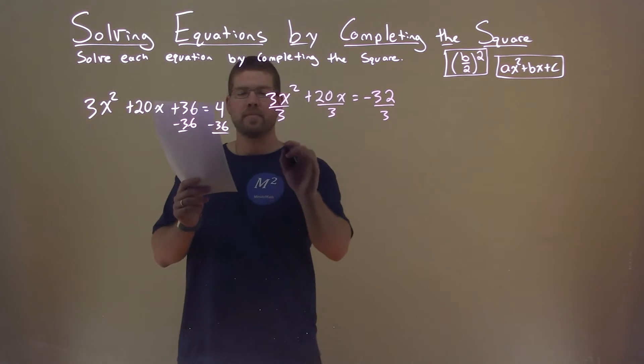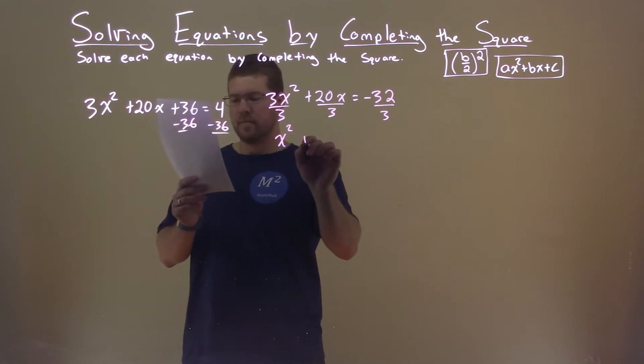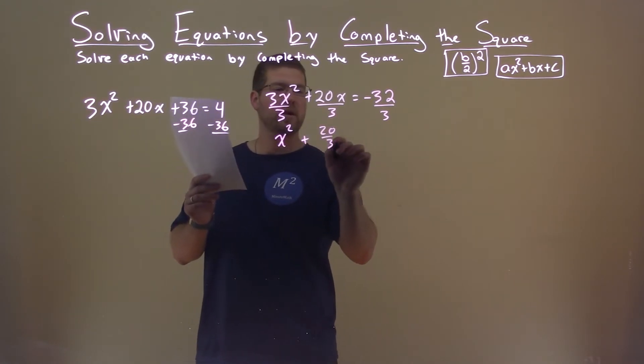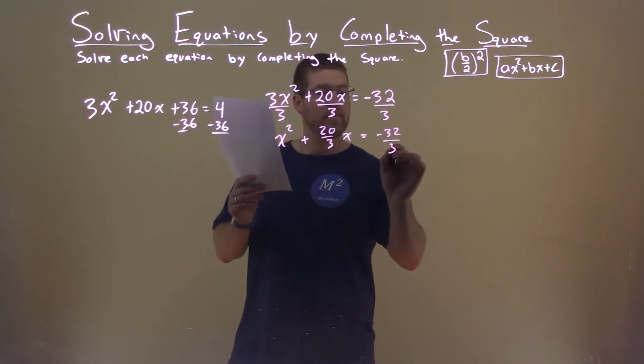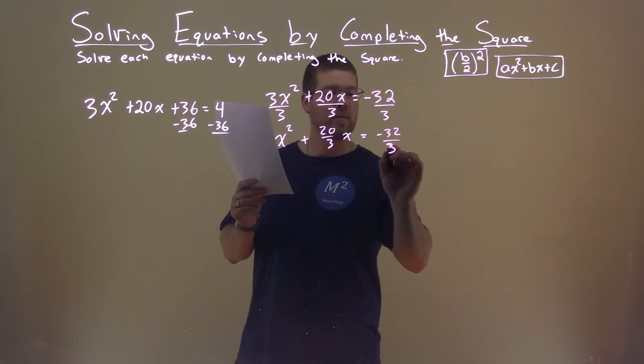I like an a value that's 1. So now we have x squared plus 20 over 3x equals negative 32 over 3. Okay, so let's try to keep our fractions in line here.